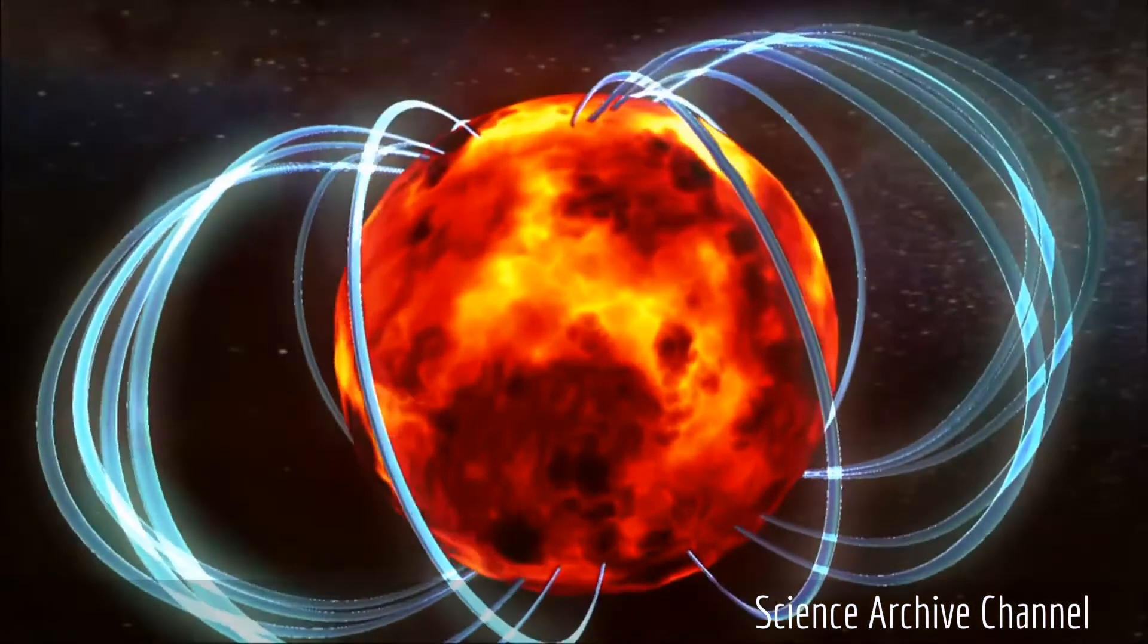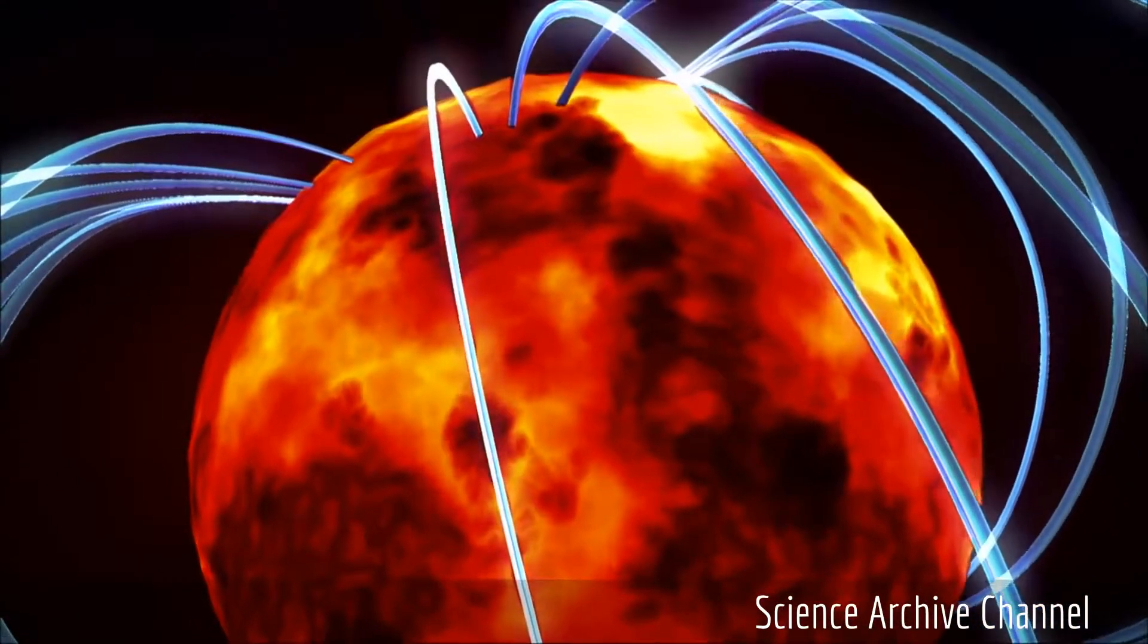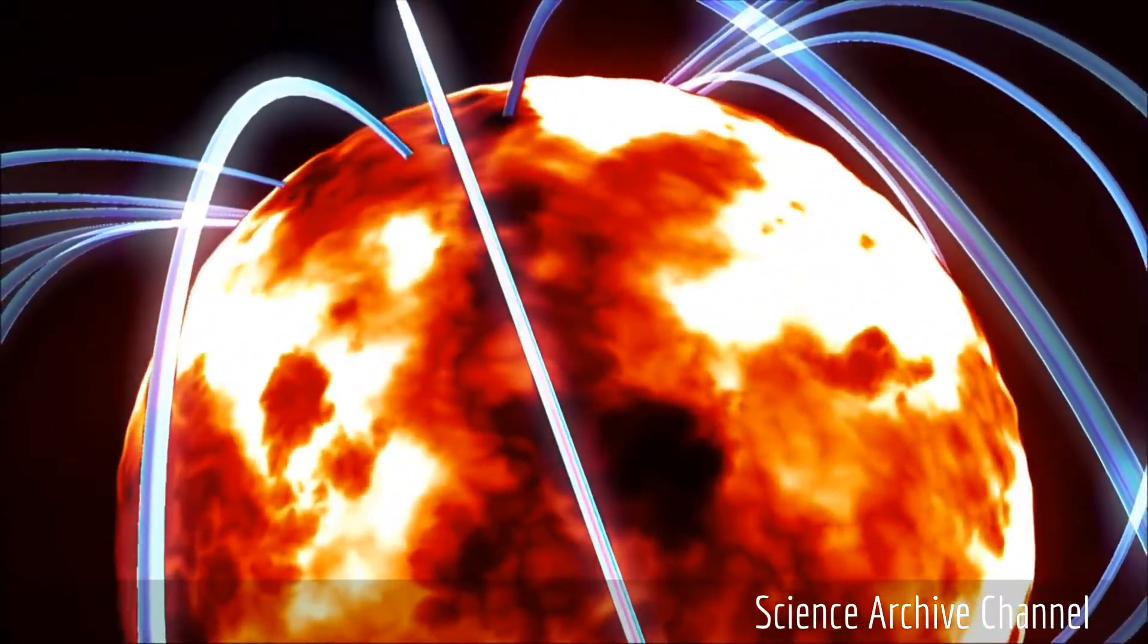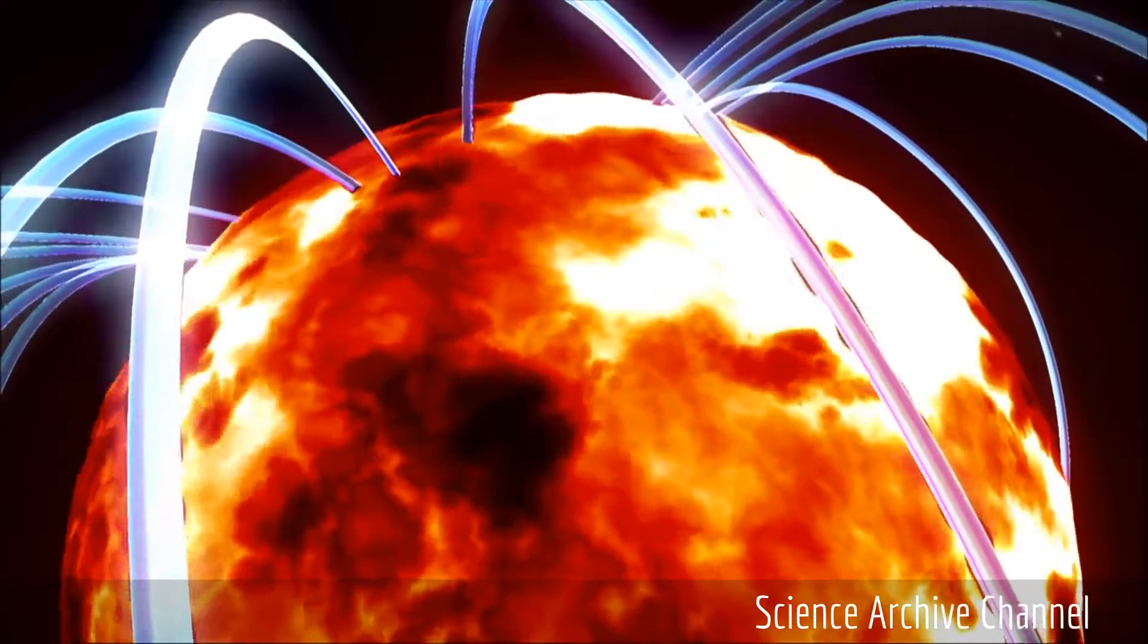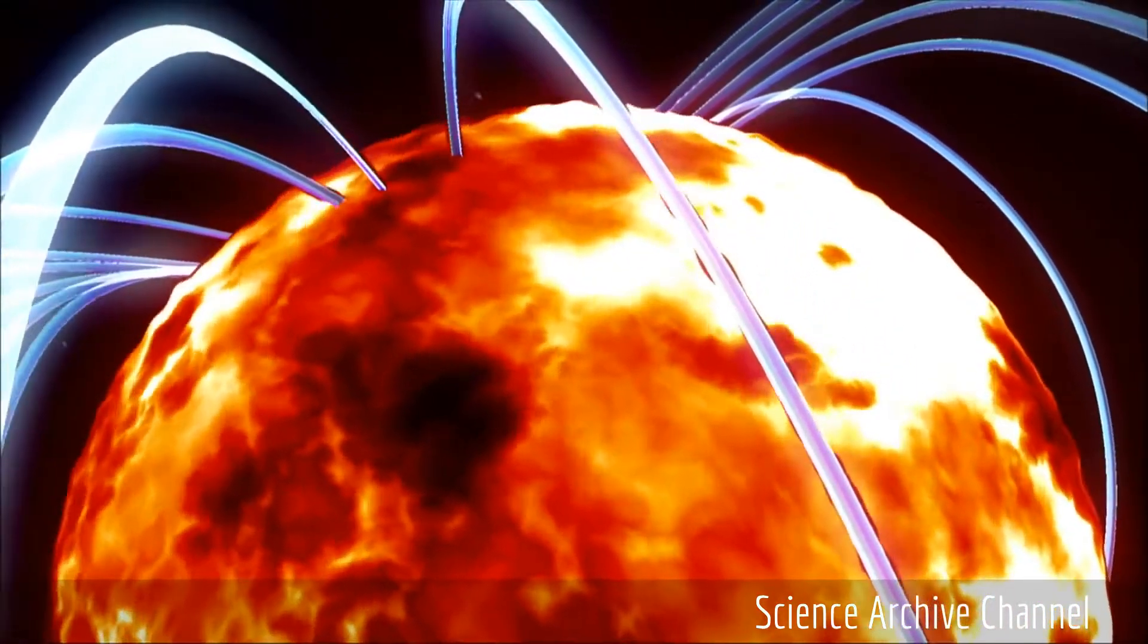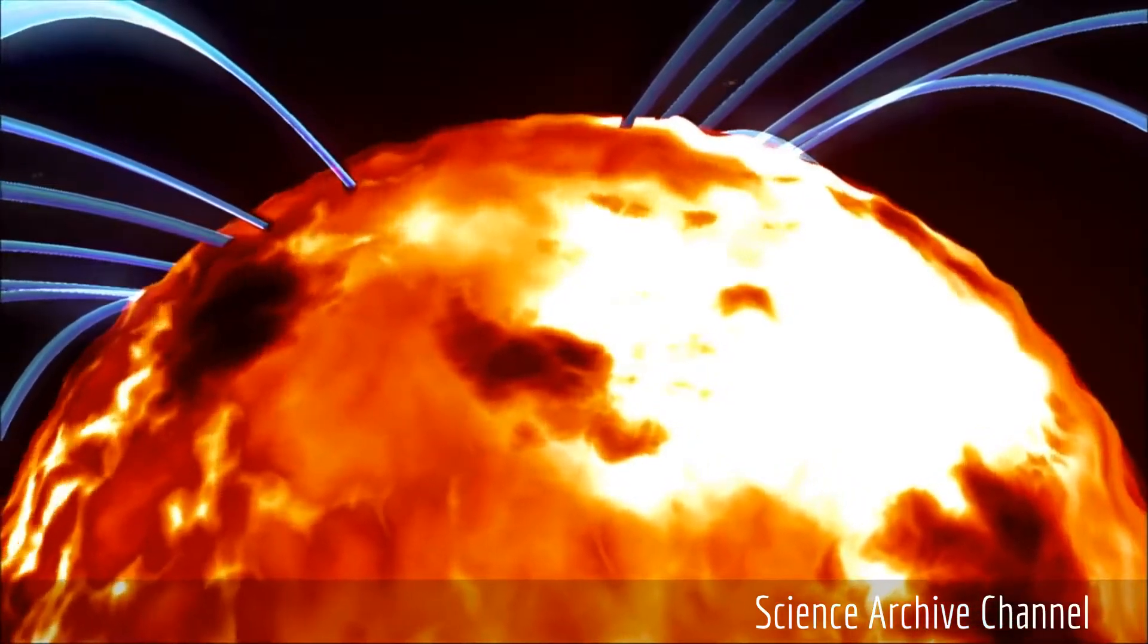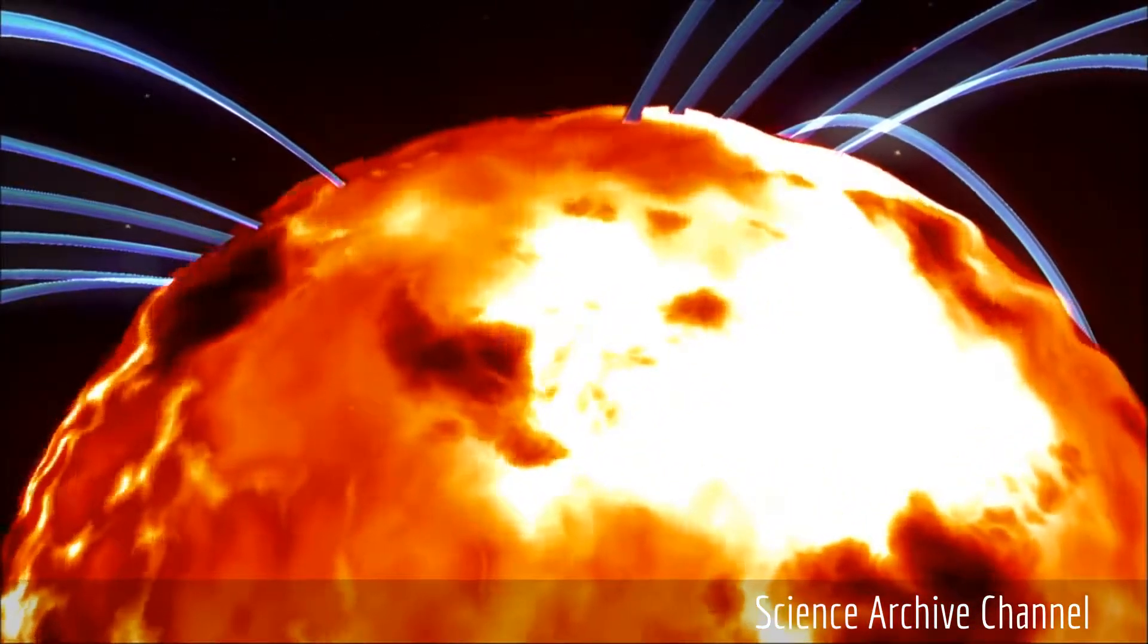If a deep space traveler veered off course and was unlucky enough to pass within 700 miles of one of these massive objects, the consequences would be horrific. The magnetic field of the magnetar can literally warp the atoms in human flesh, and its gravitational forces would tear a person apart.